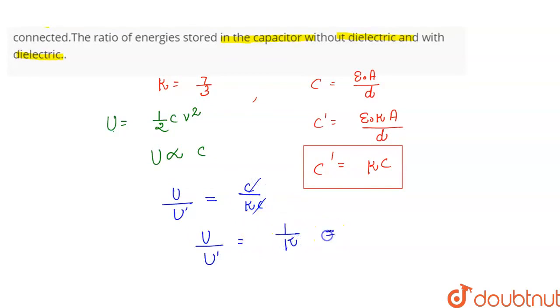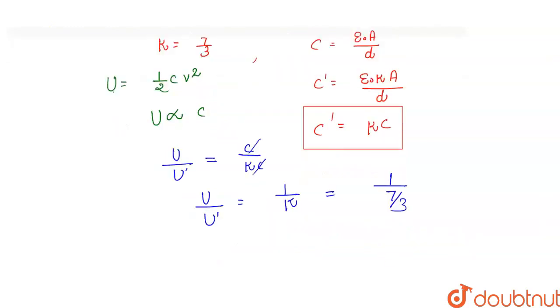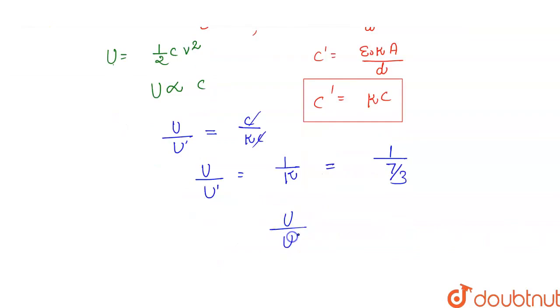The ratio is 1 upon k. The k value is 7 by 3. So U upon U dash is equal to 3 by 7. In this question, we find out the ratio with the dielectric and without the dielectric.